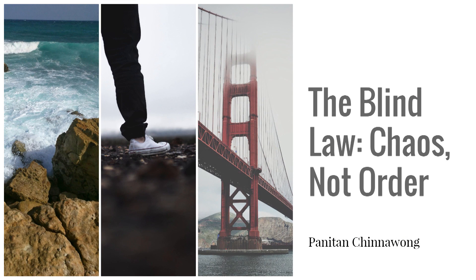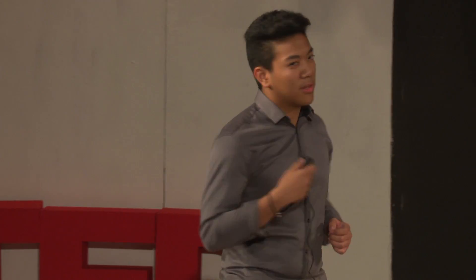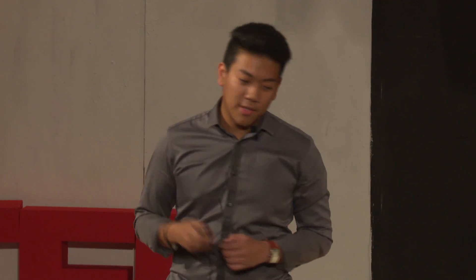Now, one of the first things that we learn about in science class is something known as the first law of thermodynamics, which states that the amount of energy in an isolated system is constant, as it cannot be created or destroyed. However, what we don't learn early on in science class is something known as the second law of thermodynamics, which does not speak about the amount of energy, but rather the quality of energy — and this will be the topic that I hope to enlighten you with today.